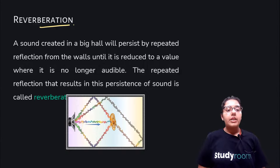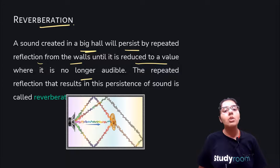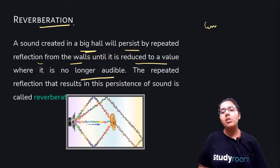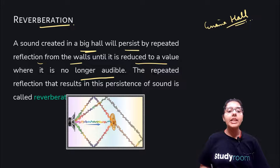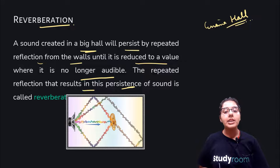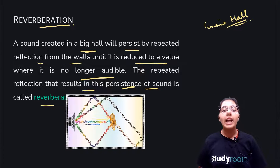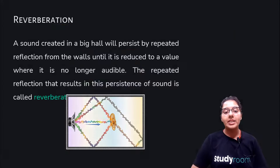Reverberation: a sound created in a big hall will persist by repeated reflection from the walls until it is reduced to a value where it is no longer audible. Have you all gone to cinema halls? The voice persists there. The repeated reflection that results in this persistence of sound is called reverberation. Cinema halls are designed this way for reverberation to occur because they want to attract the audience.